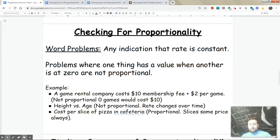For example, a game rental company costs $10 membership plus $2 per game. That's not proportional because even though it's $2 per game, which is constant, the fact that it starts at $10 means it doesn't start at (0, 0). Height versus age—not proportional because you don't grow at the same rate all the time. Proportional relationships have the same rate all the time.